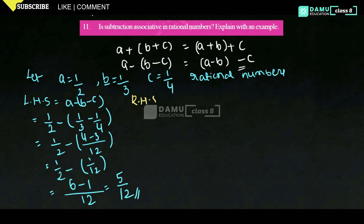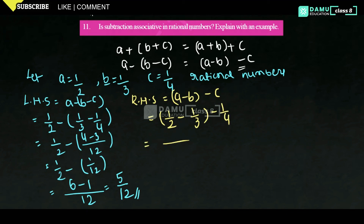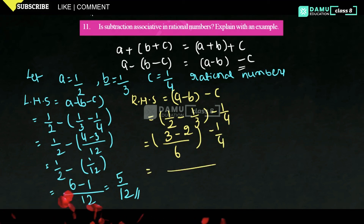Then RHS equals (A minus B) minus C. That is (1/2 minus 1/3) minus 1/4. First subtract 1/2 minus 1/3: take LCM 6. 2 times 3 is 6, and 3 times 2 is 6. So we get (3 minus 2) over 6, then minus 1/4.